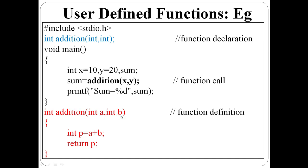Two integer variables are assigned. Then int p equal to a plus b — the sum is assigned to p, then return p. The value of p is returned at the end.